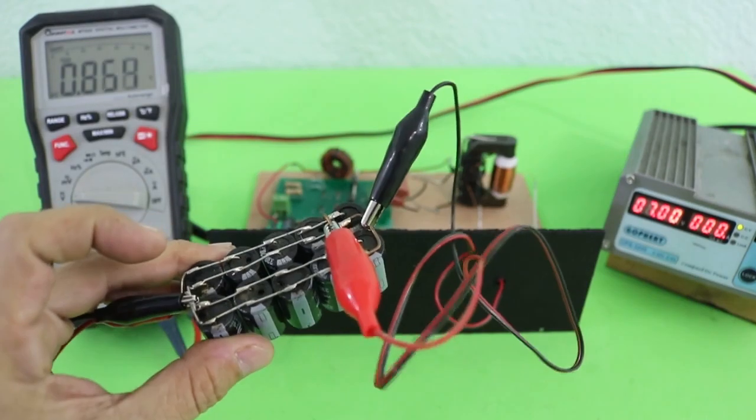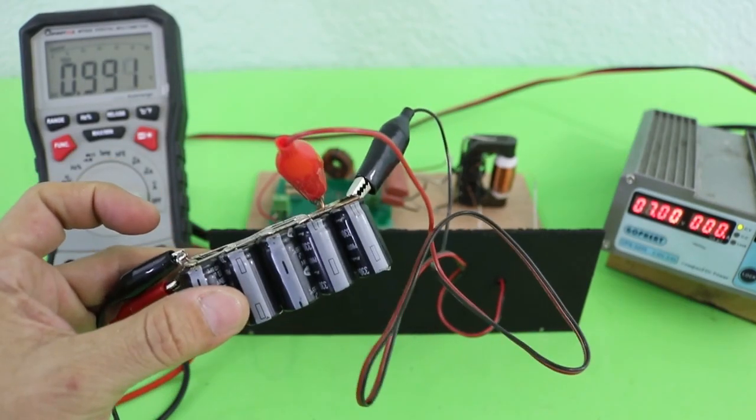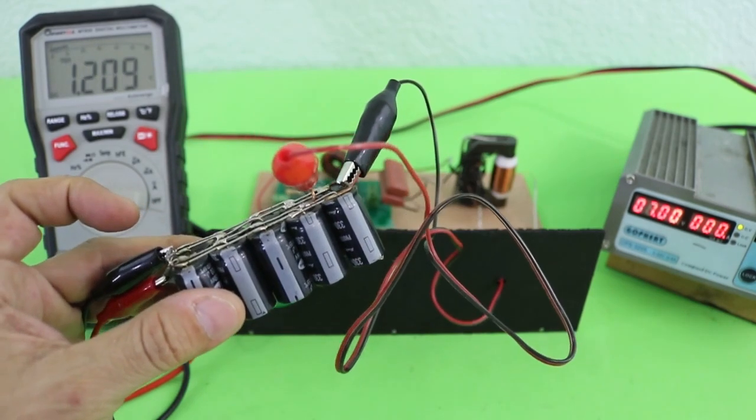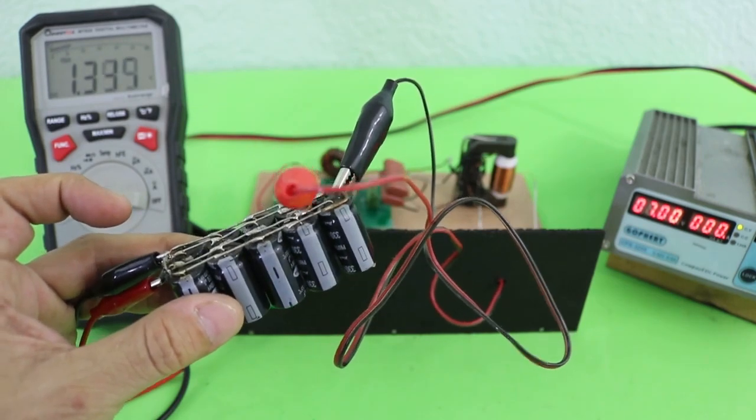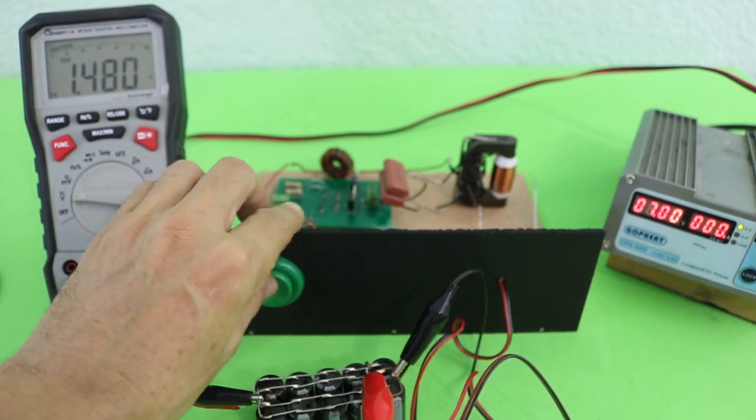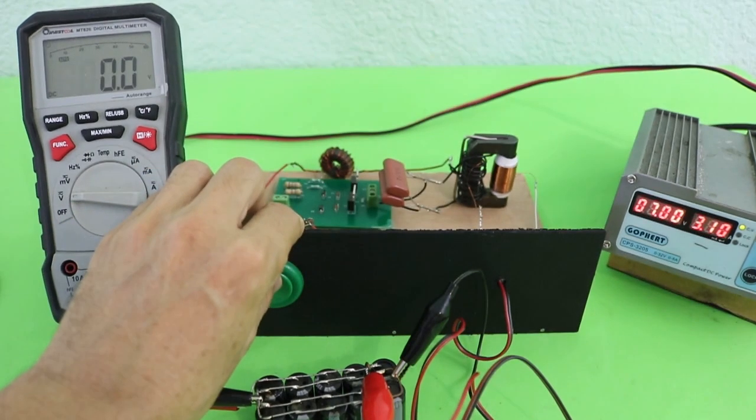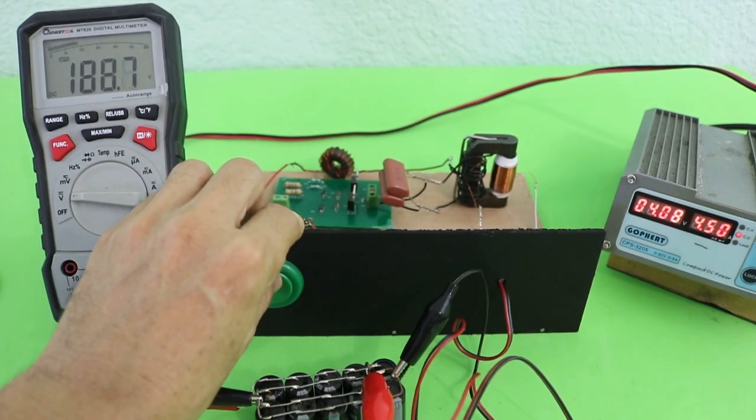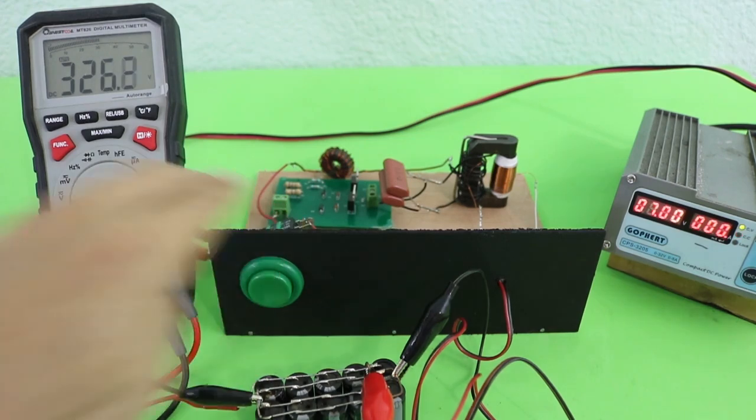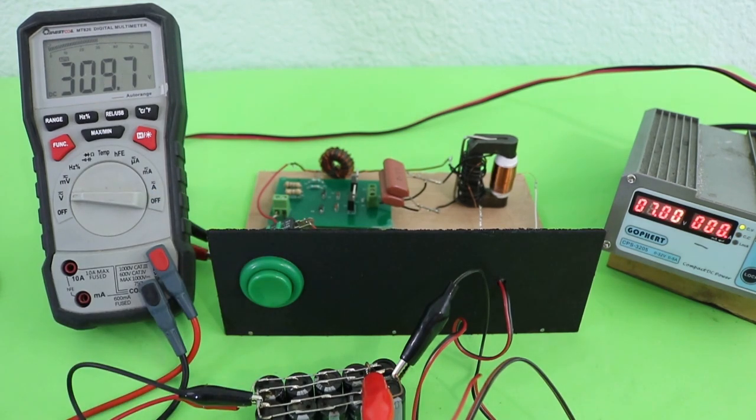I will now charge this small capacitor bank, approximately 3000 microfarads, and the working voltage is 330 volts. So let me turn on the charger. There it goes. So we charged our bank in just a few seconds.